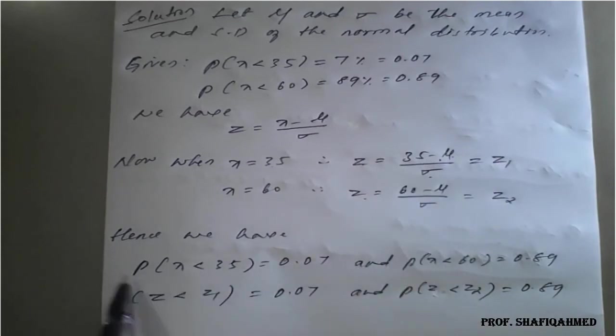Same as how we have taken previous example. Now so we will apply this here. So hence, we can write this one as P of X less than 35 is equal to 0.07.